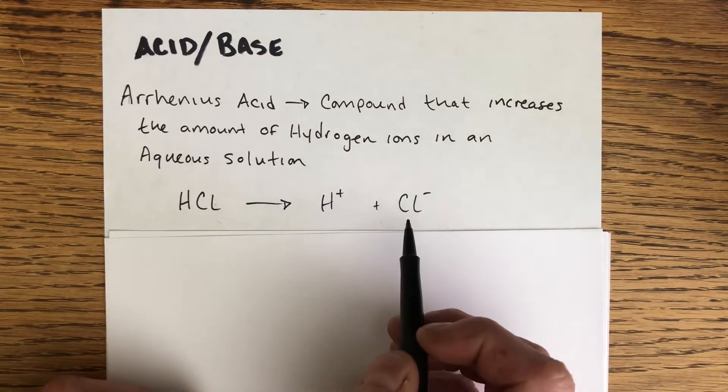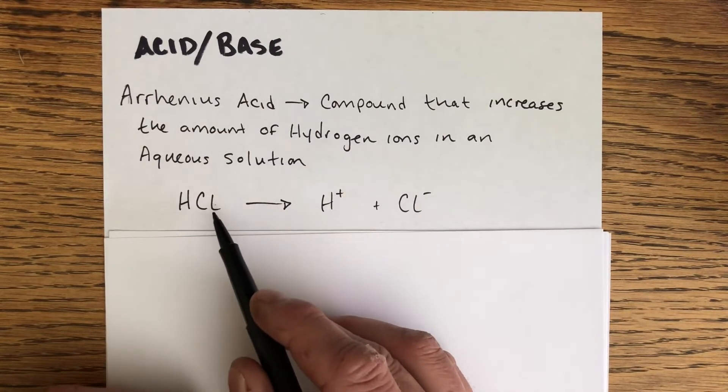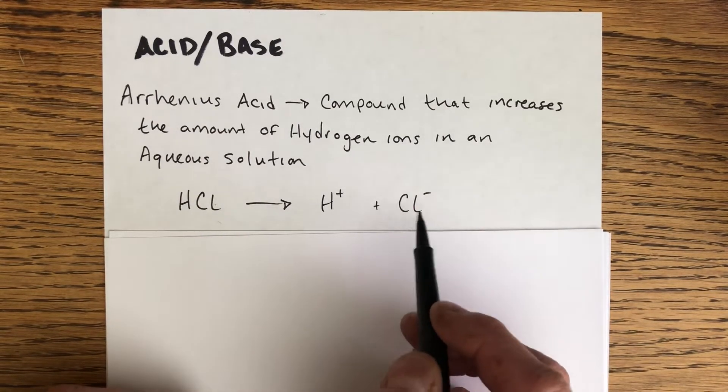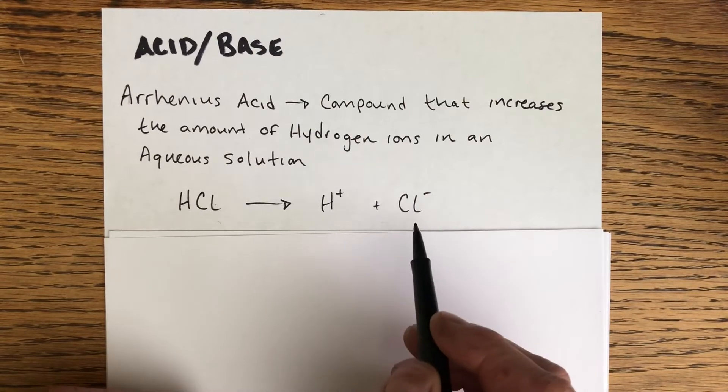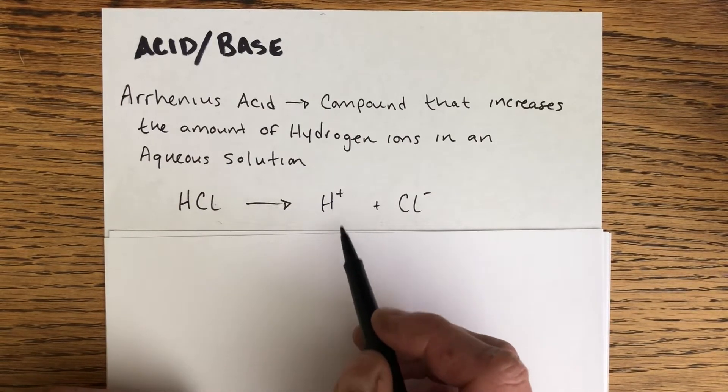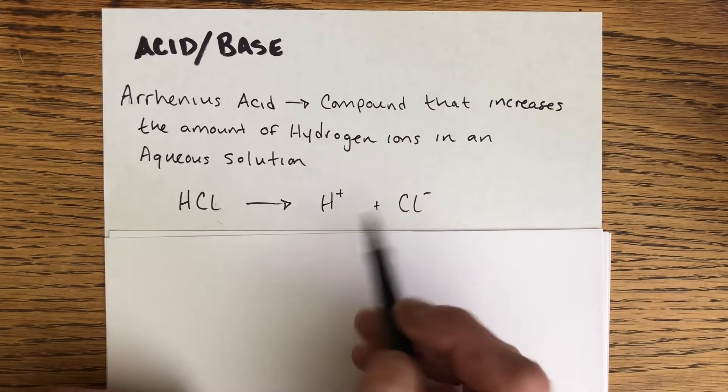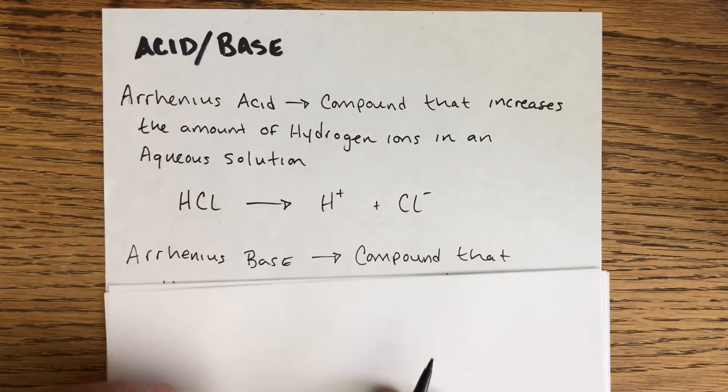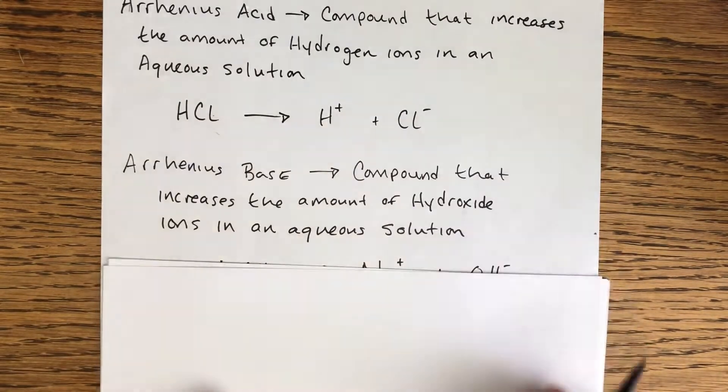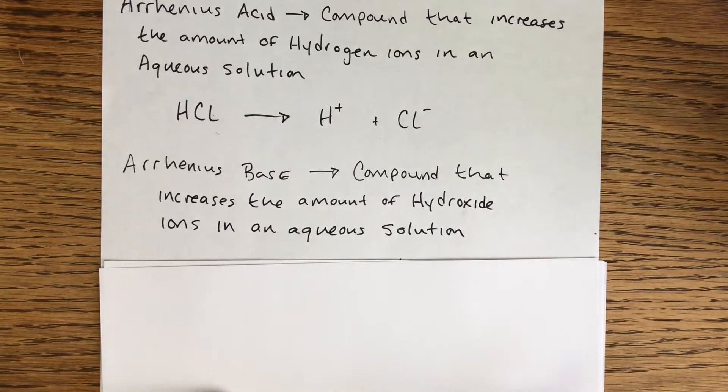Assuming you're dumping this stuff into water, you're increasing the concentration of chloride ions, but you're also increasing the concentration of hydrogen ions. That's the important part of being an Arrhenius acid.